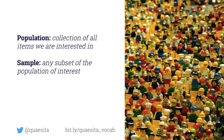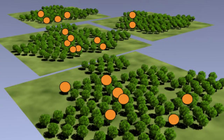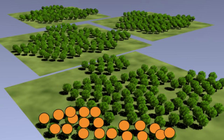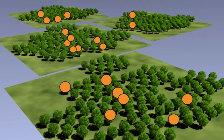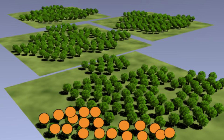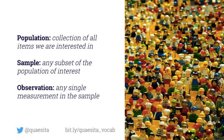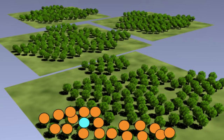What is a sample? A sample is any subset, any sub-collection from our population — like those trees labeled orange, or those. Either is a sample. One might be a better sample than the other, but they're both samples. An observation is one single measurement in the sample, like this blue one over here.